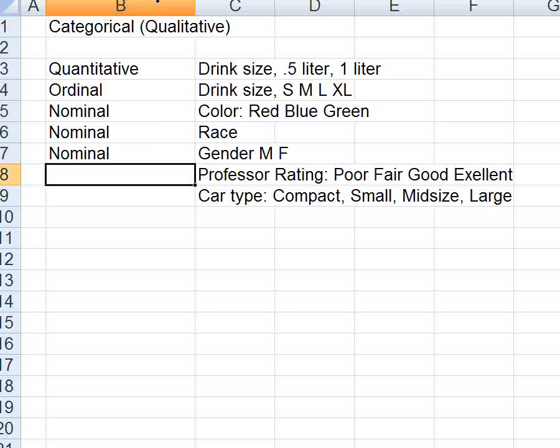Professor ratings at the end of a course, poor, fair, good, excellent. That's ordinal because there is a definite order that those answers would go in.